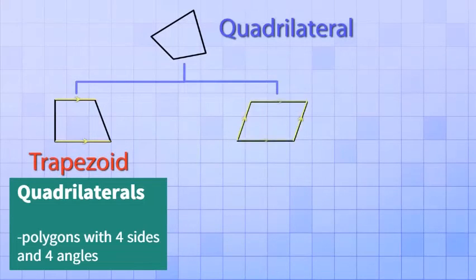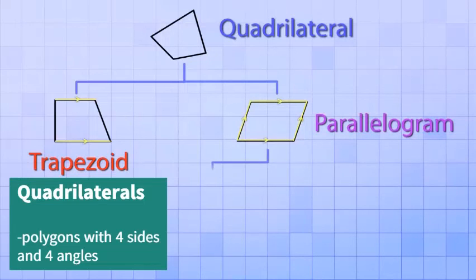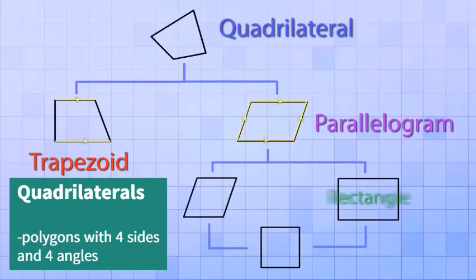Or if it has two pairs of parallel sides, we call it a parallelogram. And you've already seen that there are several types of parallelograms, called rectangles, rhombuses, and squares.